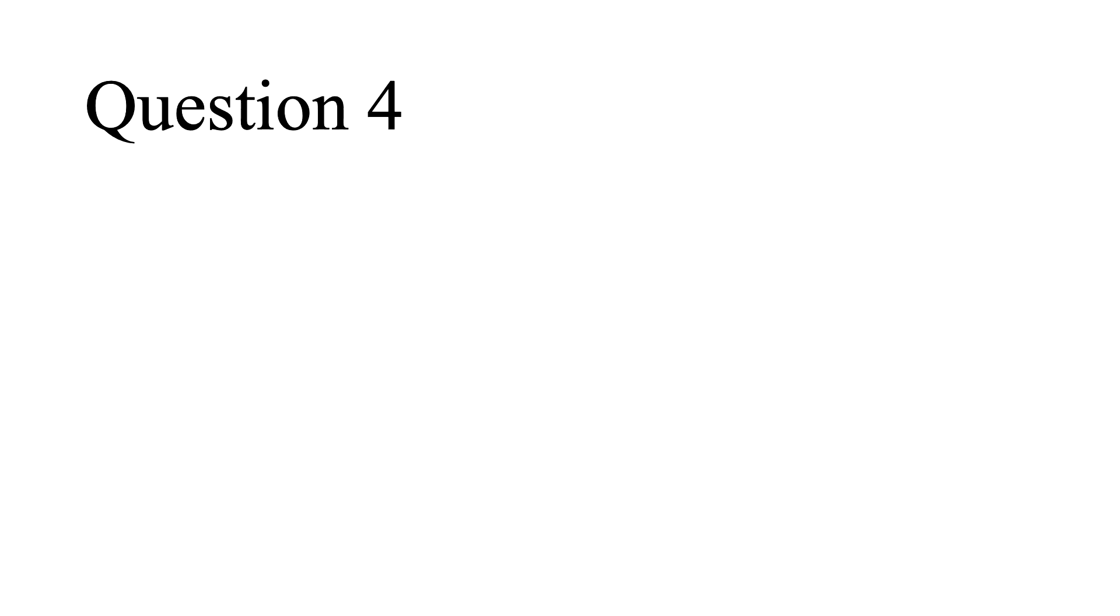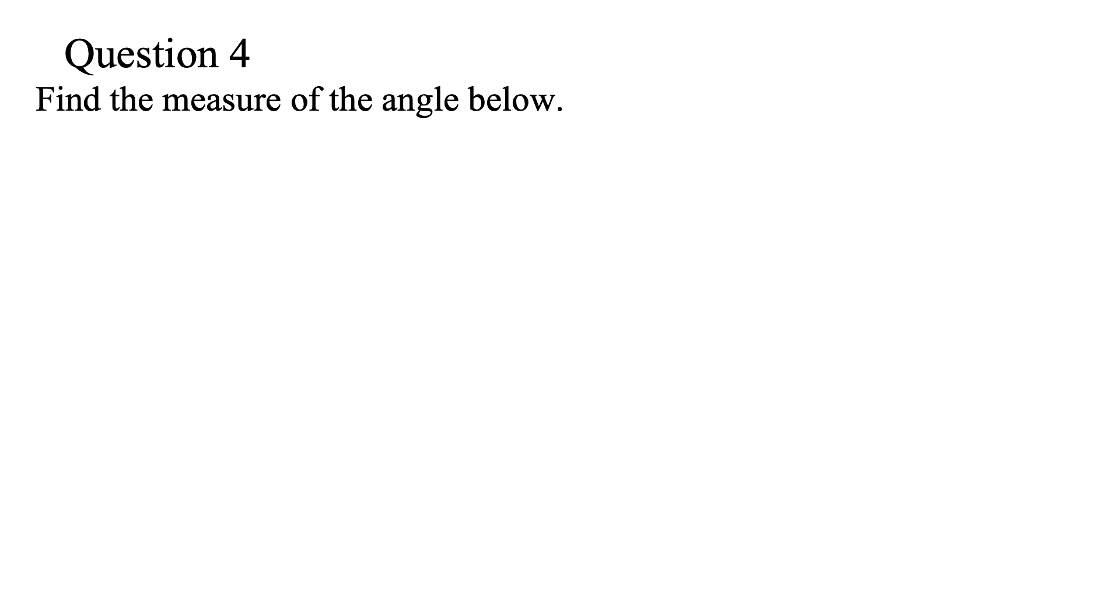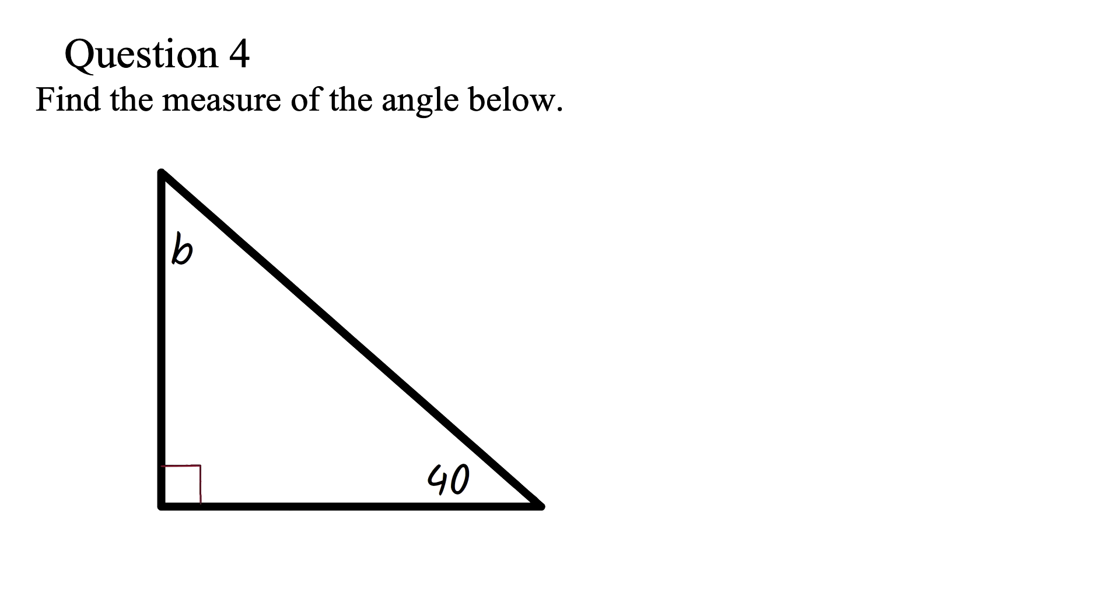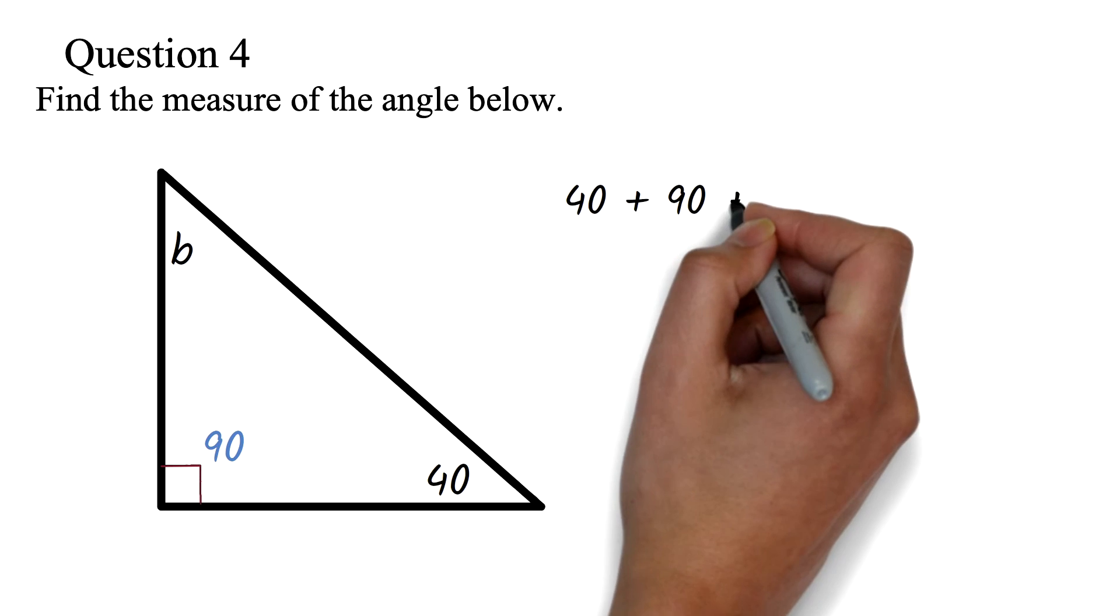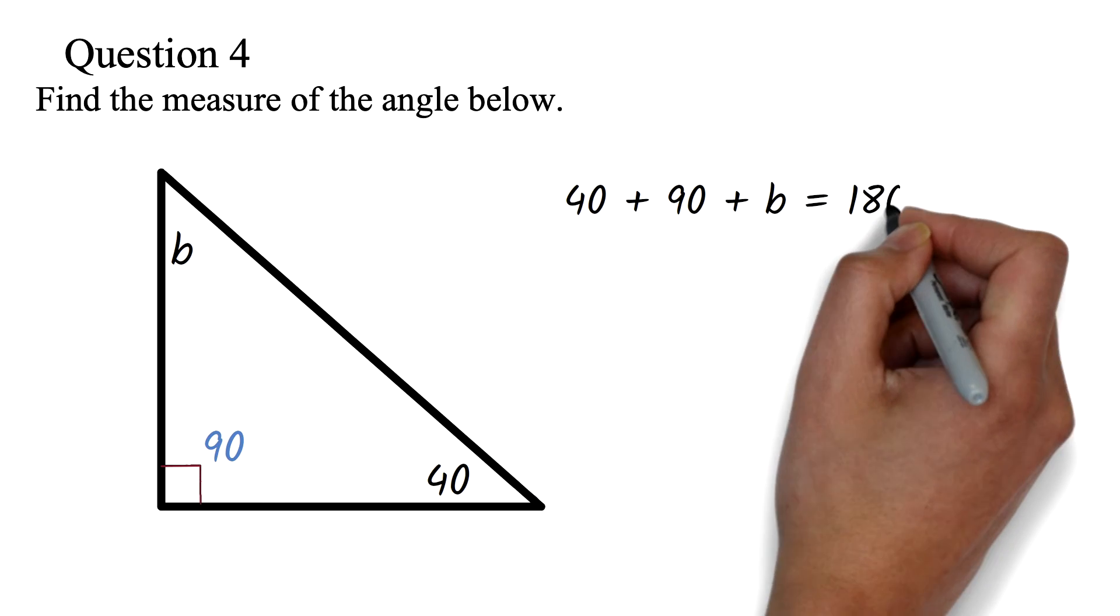Question 4. Find the measure of the angle below. Here, the first thing you have to identify is that this is a right triangle because of this mark here. This means this angle is 90 degrees. We know that the sum of the interior angles of a triangle is 180 degrees. So we can add 40 plus 90 plus B and this must be equal to 180.